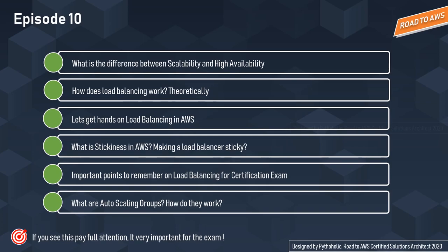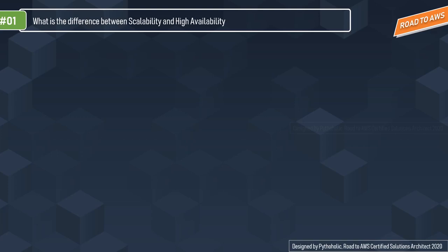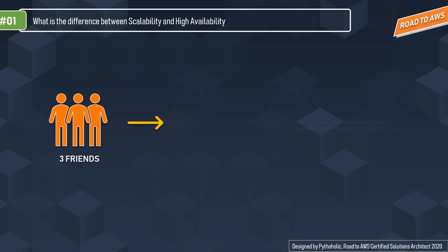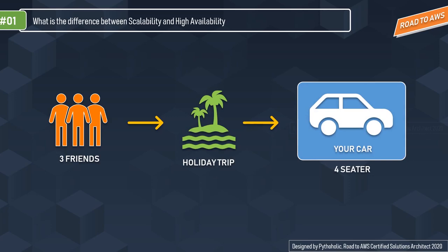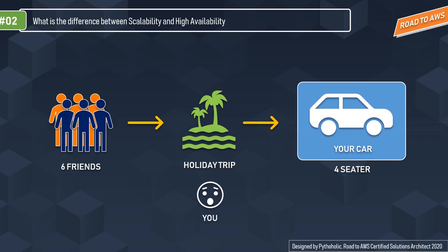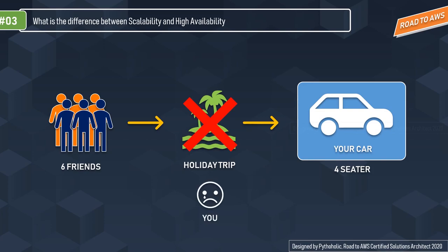Let's start with scalability. For better understanding, let's plan a holiday trip to Goa. I call my three best friends and we rent a four-seater car — four people, four-seater car, all good. But then three more unwanted friends want to tag along, making seven people total, and now everyone is uncomfortable with just one car.